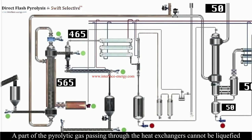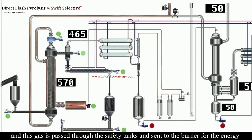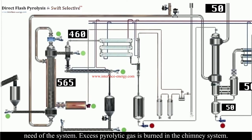A part of the pyrolytic gas passing through the heat exchangers cannot be liquefied and this gas is passed through the safety tanks and sent to the burner for the energy need of the system. Excess pyrolytic gas is burned in the chimney system.